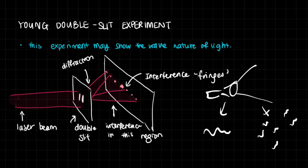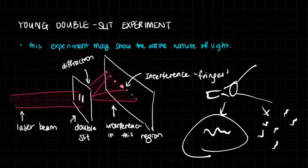Sometimes light seemed to exhibit wave-like behavior, and sometimes particle-like behavior. This was one of the most important experiments that showed light was a wave. Obviously now, we know that light is a wave sometimes and also a particle sometimes, because it exhibits both characteristics. We call this the wave-particle duality of light. But back then we didn't know it, and therefore when we found out that light was actually a wave, it was very groundbreaking.